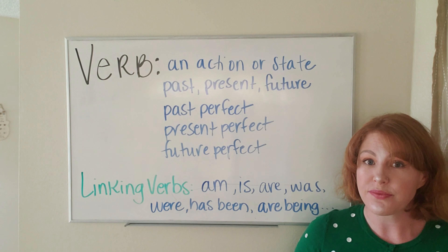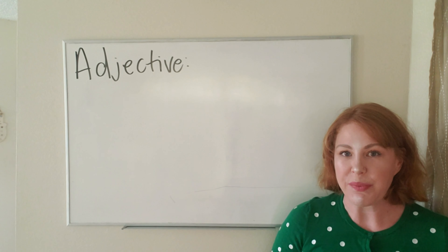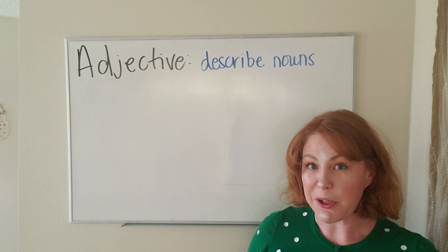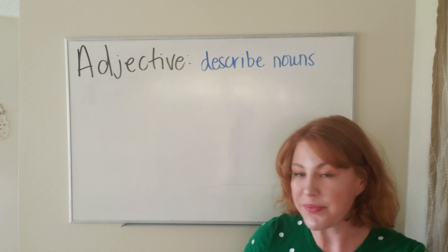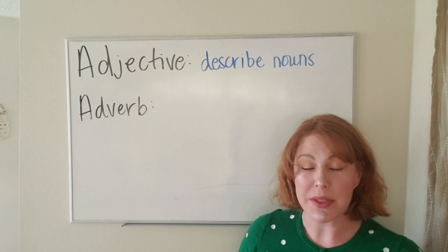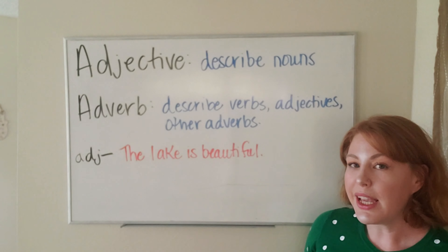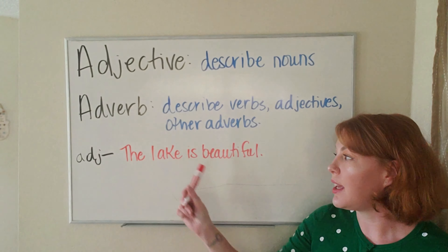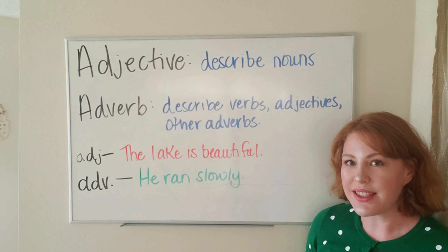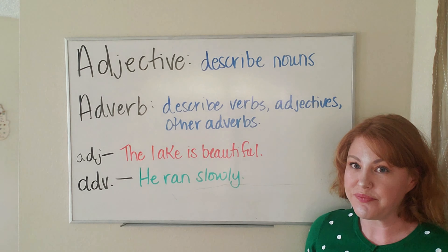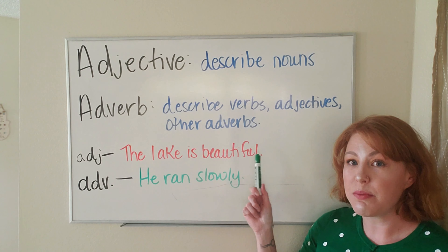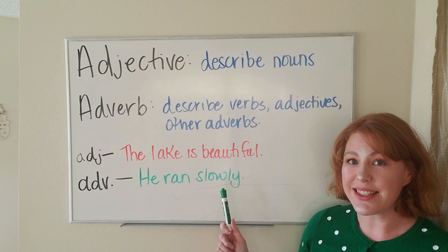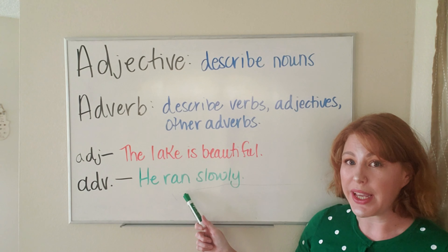The next part of speech is called an adjective. Adjectives describe nouns. The next part of speech is called an adverb. Adverbs describe verbs, adjectives, and other adverbs. In our first sentence, we use 'beautiful' to describe the lake — beautiful is describing a lake, which is the noun. In our second sentence, we use 'slowly' to describe 'ran' — slowly is describing ran, which is a verb.